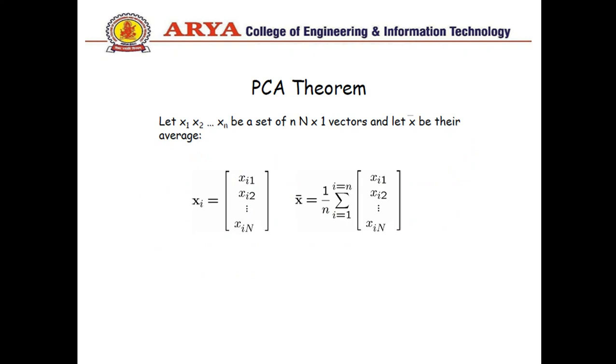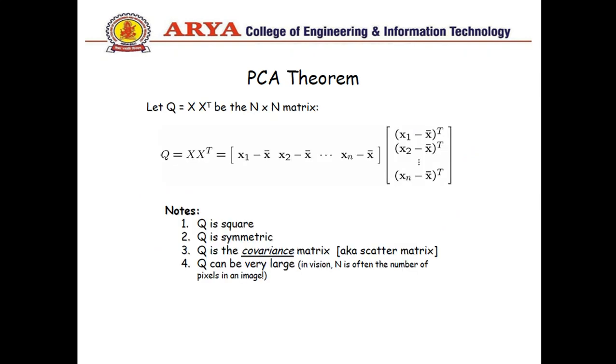PCA theorem can be understood by this slide. Here we are considering a simple matrix and we are calculating the mean. Mean is the total number of elements summation divided by total number of elements. Again here we have a simple mathematical representation: suppose we have a matrix Q, it can be square, it can be symmetric, or it can be a covariance matrix. The covariance matrix can be calculated by matrix times transpose of a matrix.